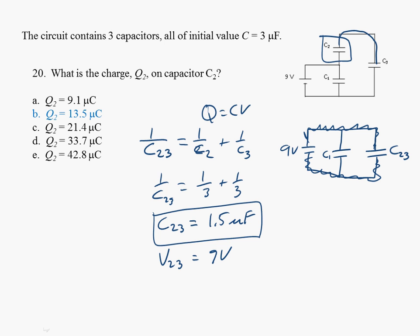So I can get the charge on 2, 3 is just going to be equal to c2, 3 times v2, 3 is equal to 1.5 times 9 or 13.5 microcoulombs. But that's q2, 3.